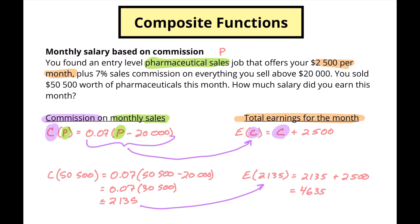All we did was take the result from the commission equation and put it into the earnings equation. We can't find total earnings without first finding commission, so we have to calculate one piece and then take that result and put it into the next equation. Wouldn't it be nice if we could do it all in one shot? That's where composite functions come in.